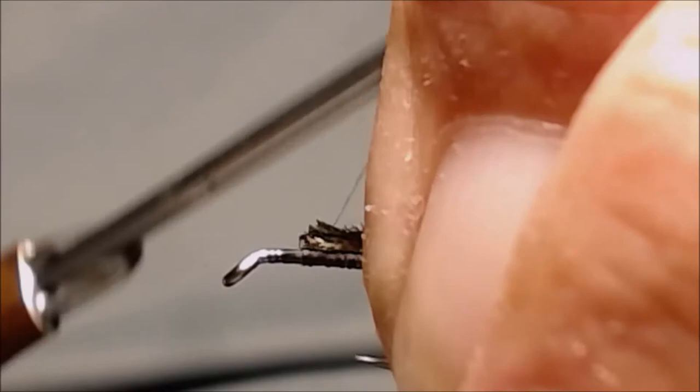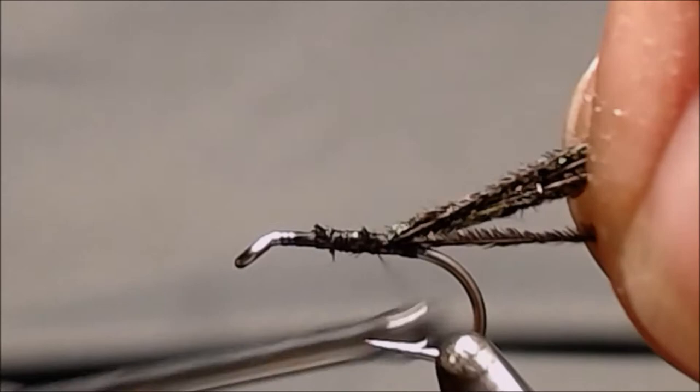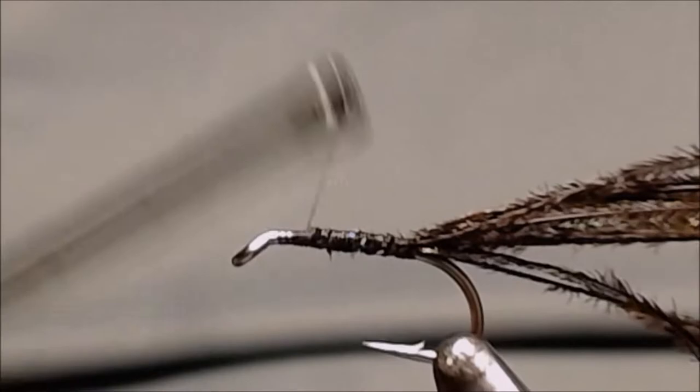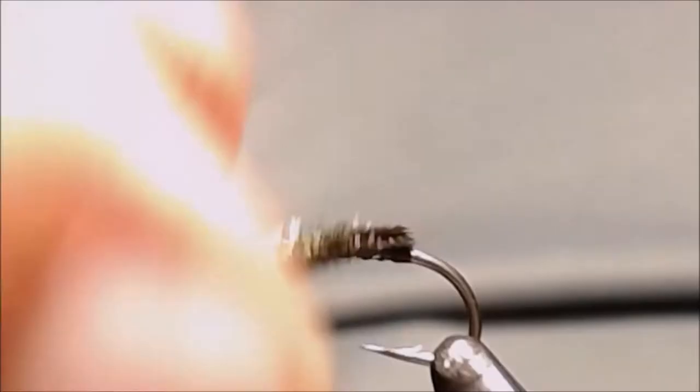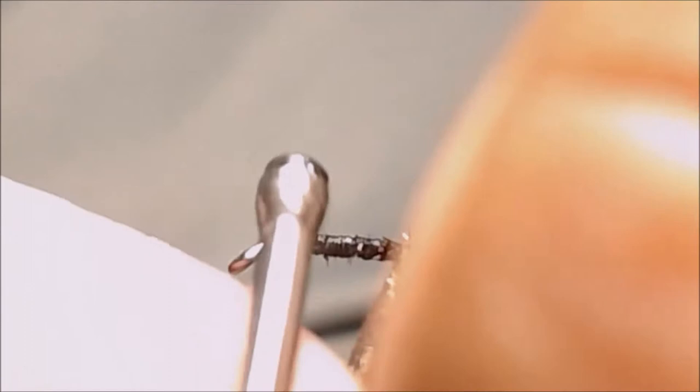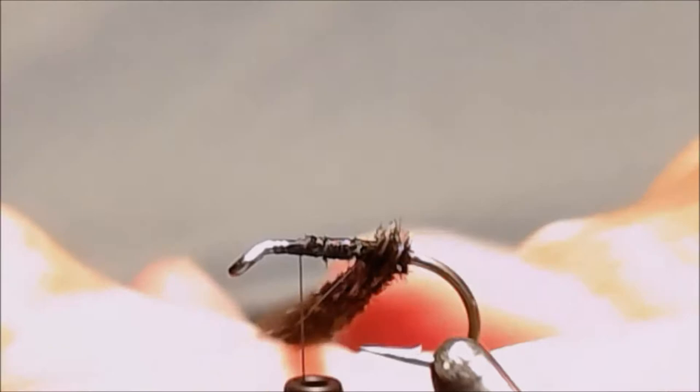We'll tie our peacock herl in, bring our thread back to the front, and we'll wind our peacock herl body on. Give it a slight twist as we wind it on to keep it together.